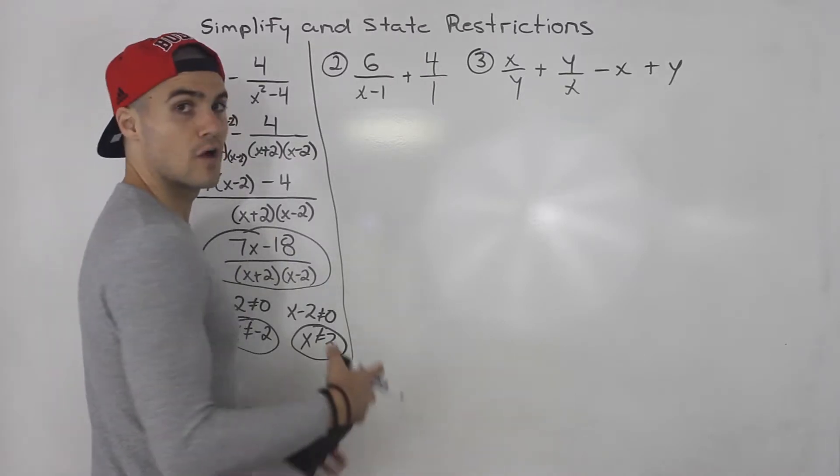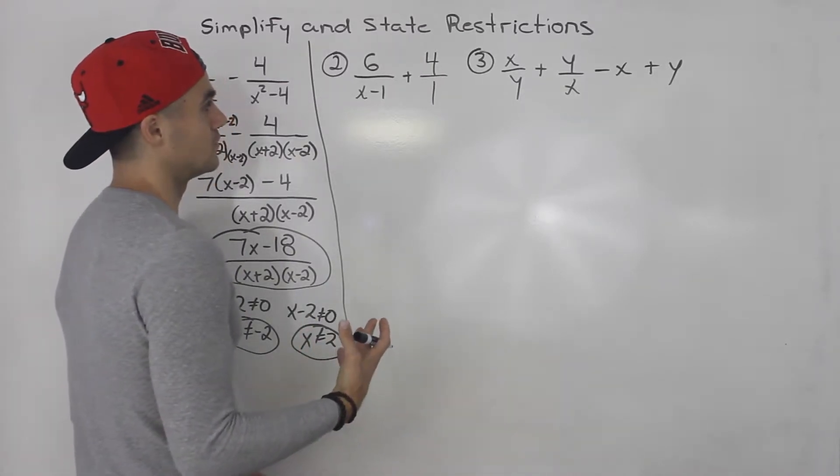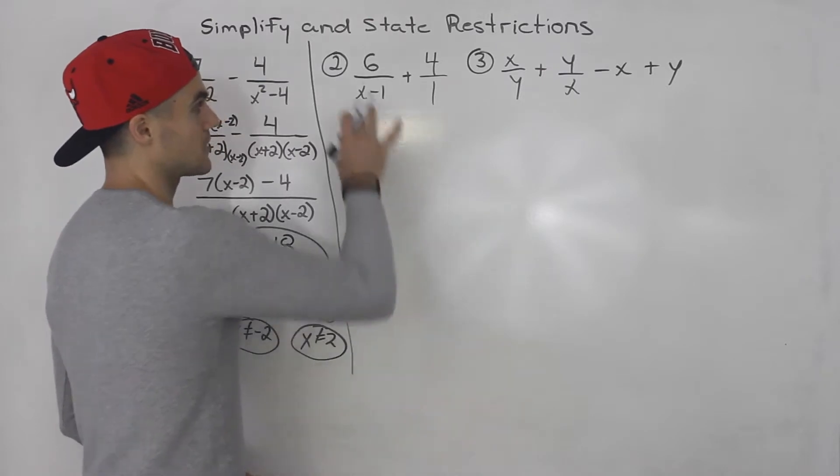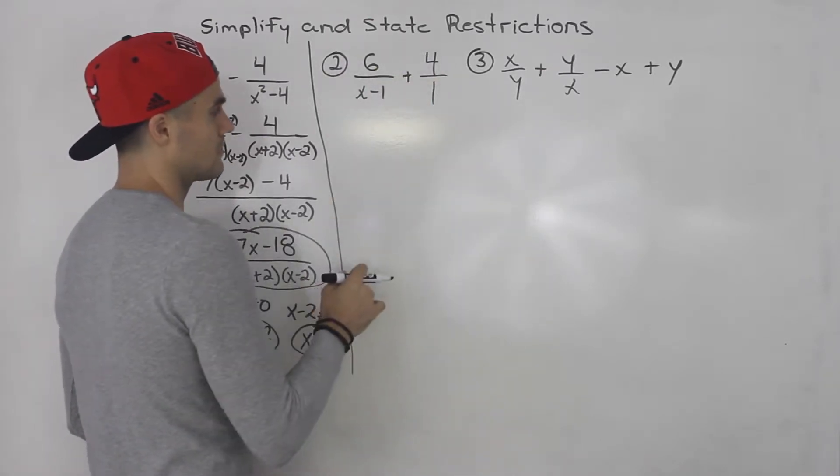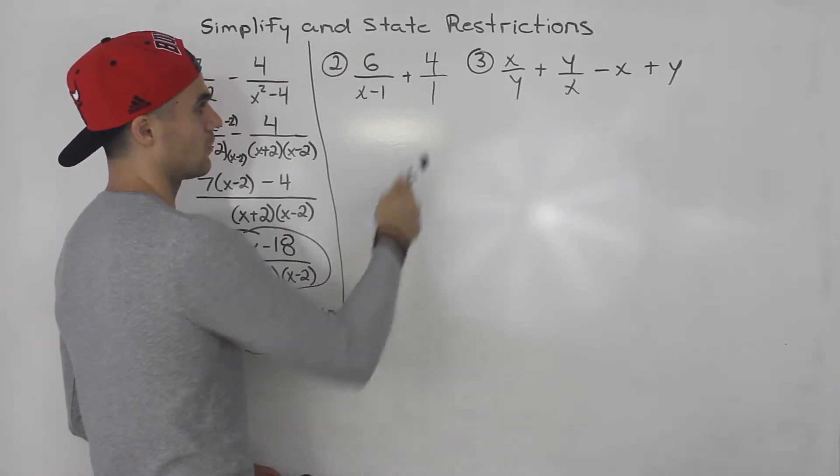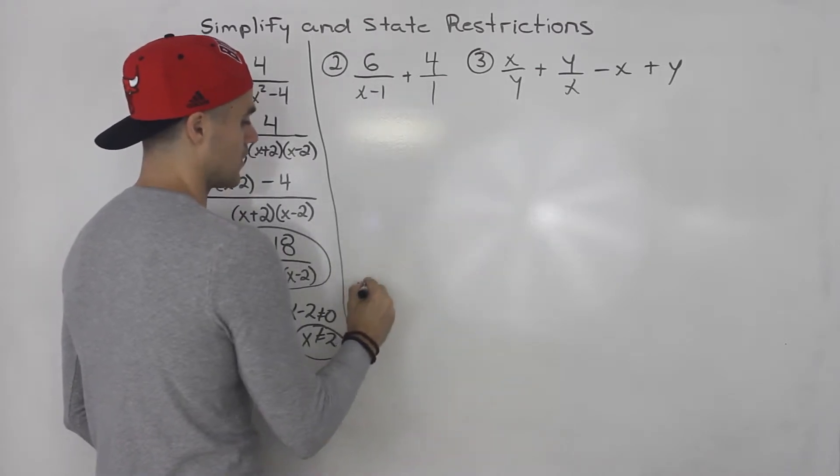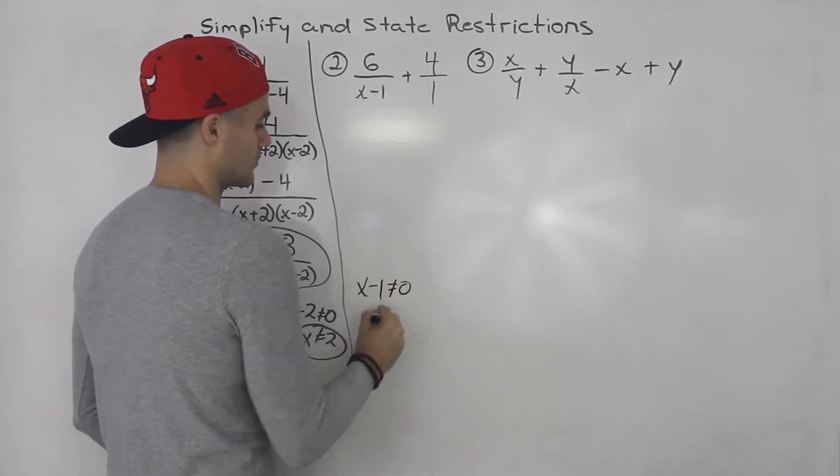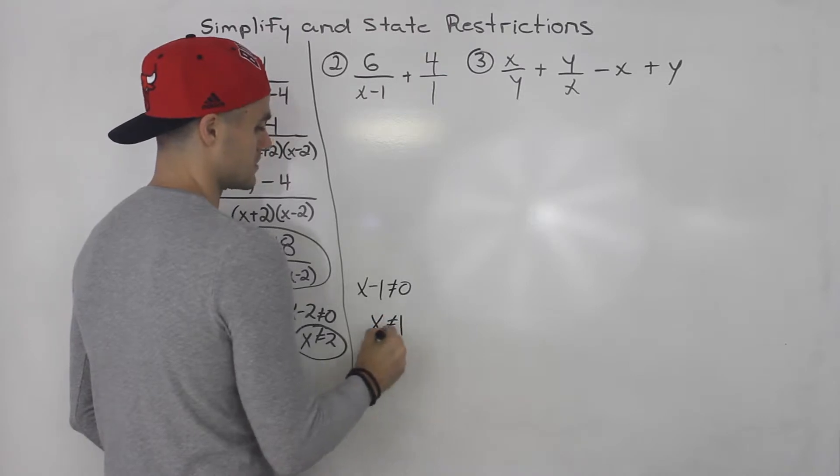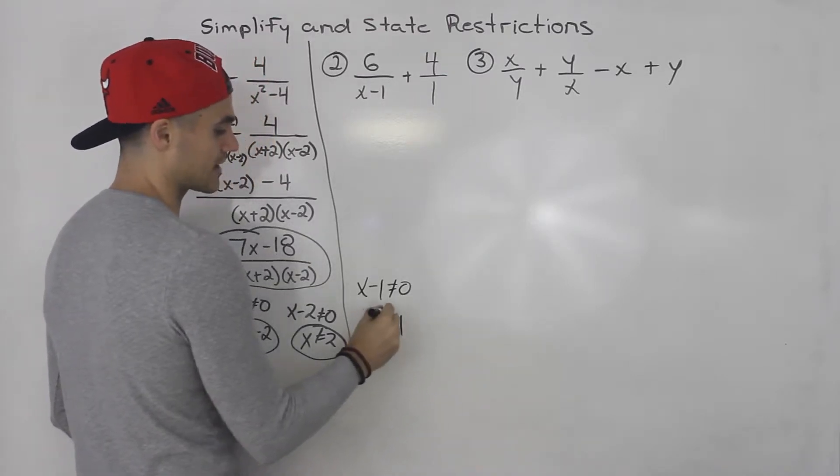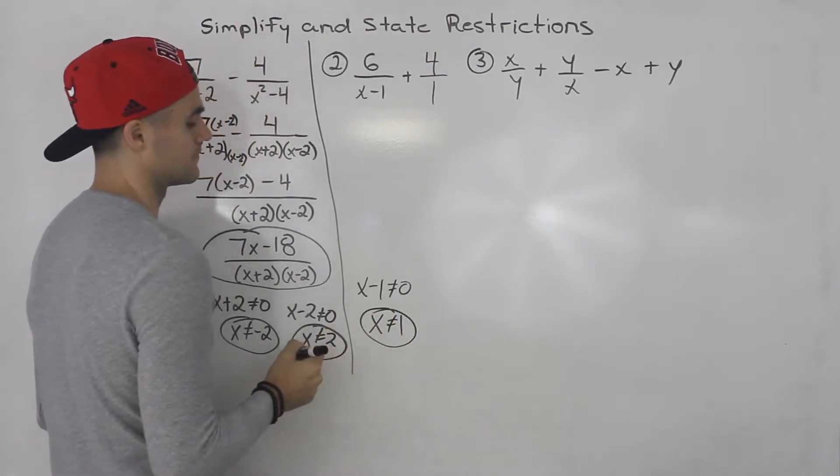From there, you follow the same steps. Make sure that everything is factored. Notice we can't factor anything further here. Then you state the restrictions. 1 will never be 0, but notice x minus 1 cannot equal 0, which happens at x value 1. So that means x cannot equal positive 1.